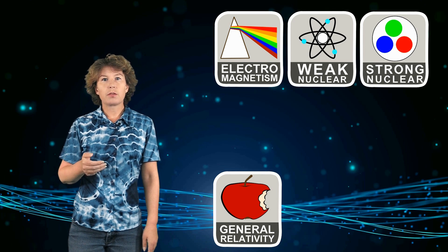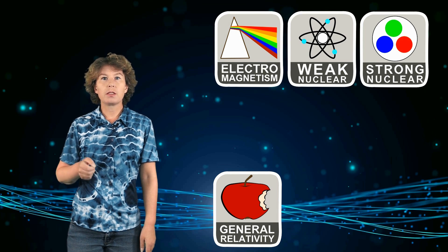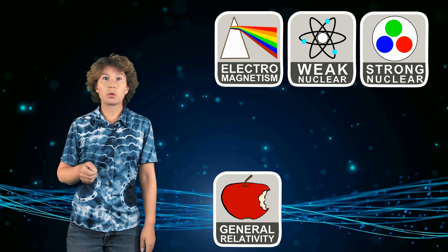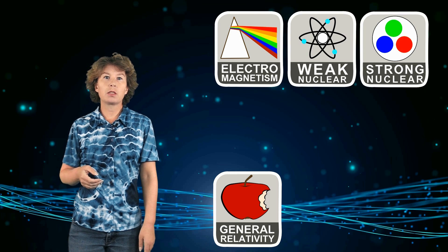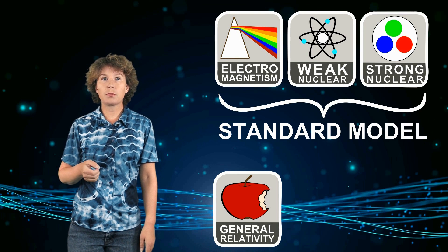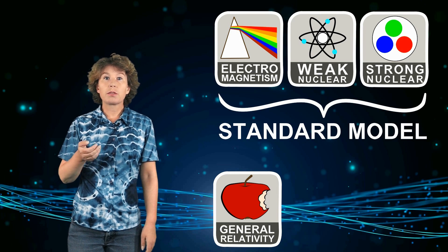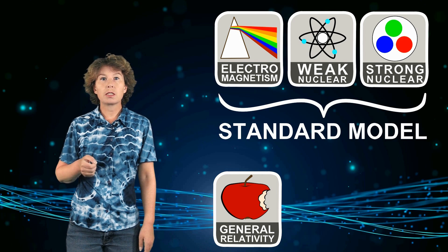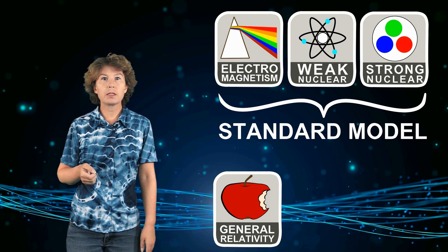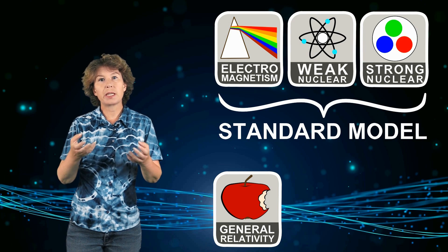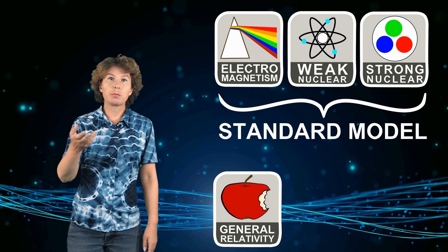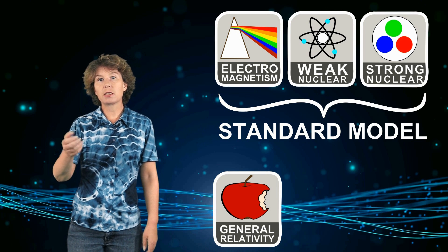Now three of the fundamental interactions, the electromagnetic and the strong and the weak nuclear force, are of the same type. They are collected in what is known as the standard model of particle physics. The three forces in the standard model are described by quantum field theories, which means, in a nutshell, that all particles obey the principles of quantum mechanics, like the uncertainty principle, and they can be entangled, and so on.